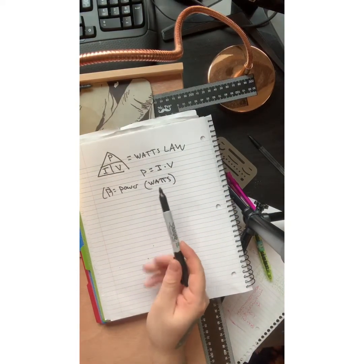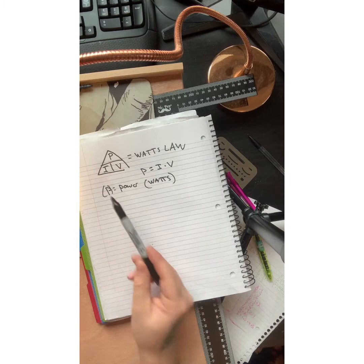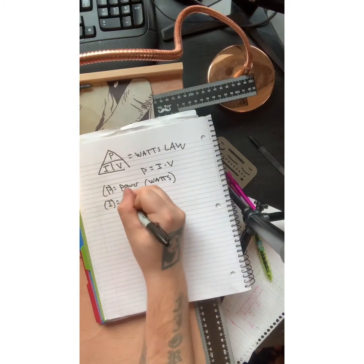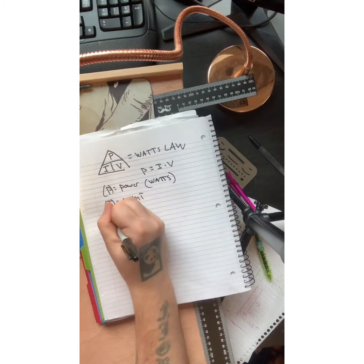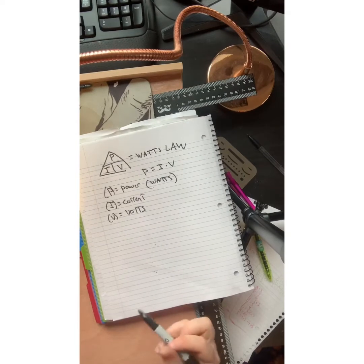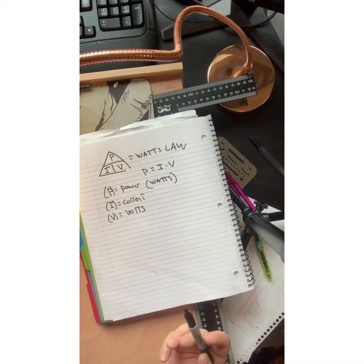So to get that, you're going to multiply your current times your voltage. Obviously, I equals current. If you weren't here last time, V equals volts. So I'll explain it again in case you weren't here for my last video.